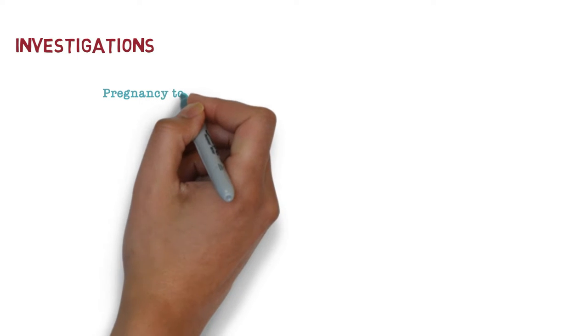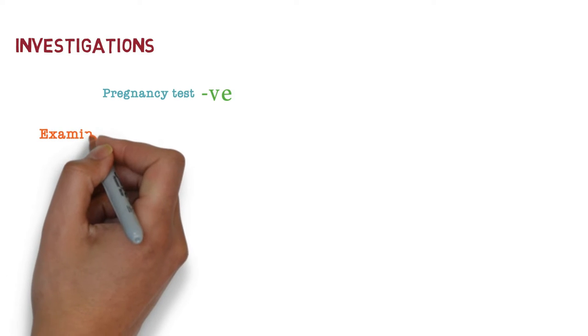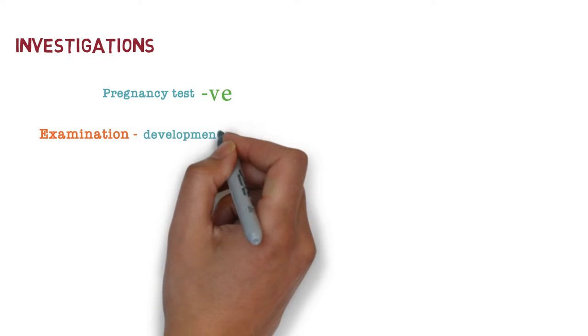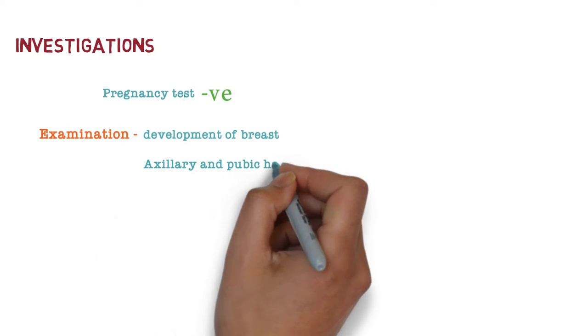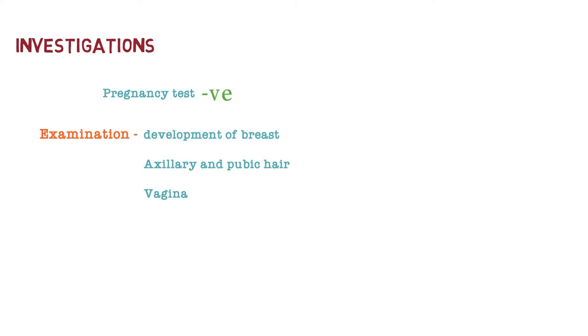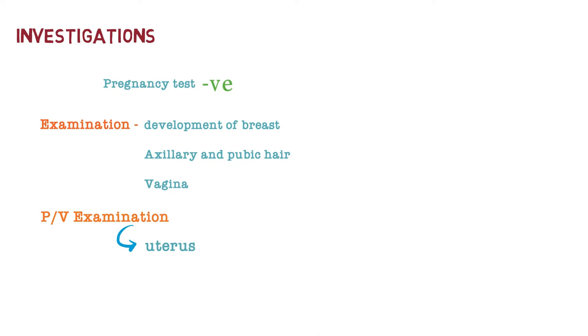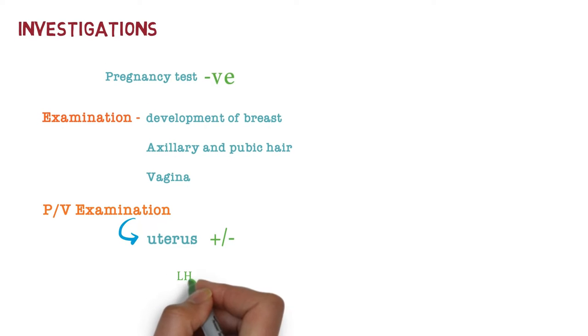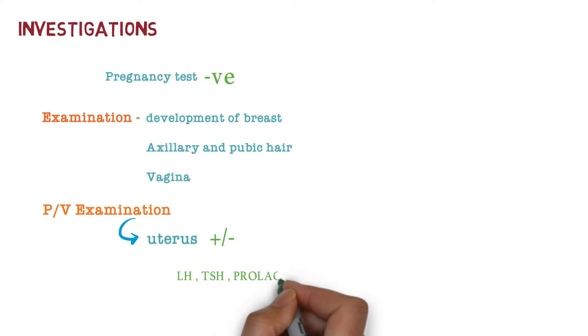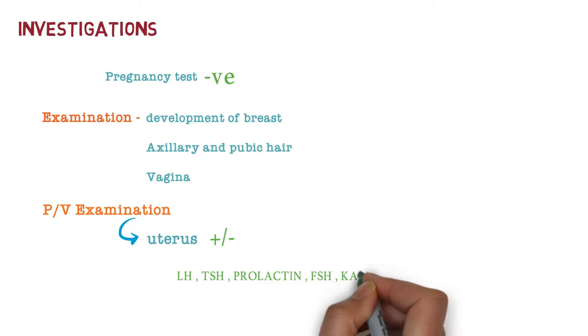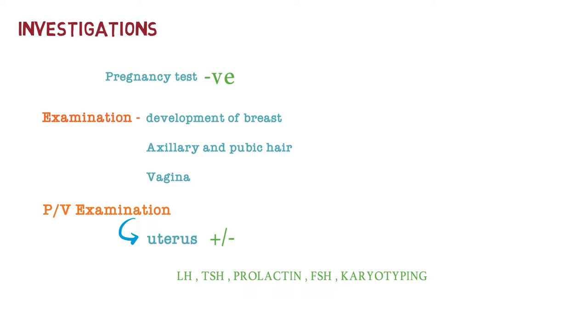First of all, we are going to check a pregnancy test. If the pregnancy test is negative, we proceed to examination of the breast, axillary and pubic hairs, and vagina, as well as a PV examination. Then we check hormones: Luteinizing hormone, TSH, prolactin, follicle stimulating hormone, and karyotyping. Karyotyping is very important.